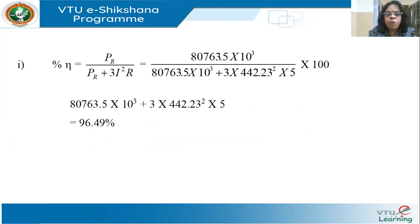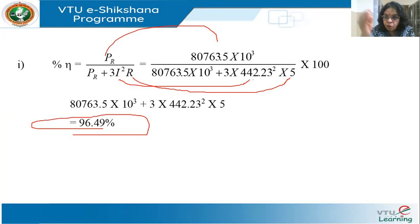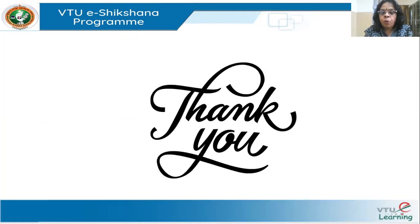The efficiency is PR / (PR + 3·I²·R) × 100 = 80,763.5 / (80,763.5 + 3 × 442.23² × 5) × 100 = 96.49%. Efficiency has reduced compared to earlier examples because when power levels increase, efficiency comes down.